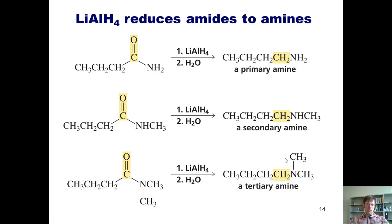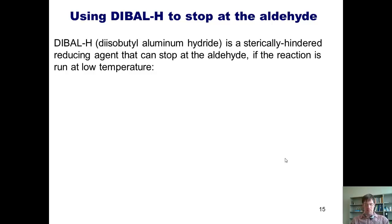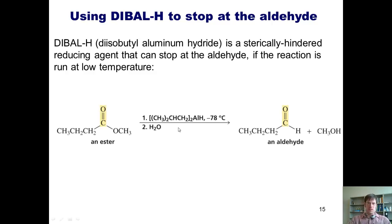If you want to review any of these reactions, go back and watch the lecture video from Chapter 18. Now, what if you have an ester and only want to reduce it to an aldehyde instead of going all the way to the primary alcohol? What can you do? You don't need some magical reagent like fairy dust or unicorn tears. You use diisobutylaluminum hydride, or DIBAL.